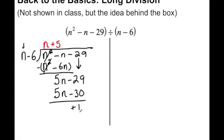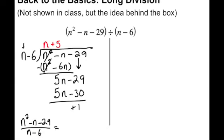So how I would write this is: n squared minus n minus 29 divided by n minus 6 equals the quotient plus the remainder over what I am dividing by.